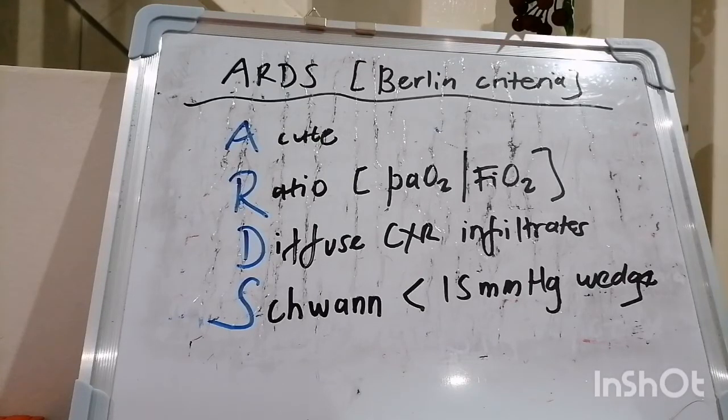In terms of PEEP, this should be employed to keep the FIO2 in the presumed non-toxic range, which is below 0.6. We increase PEEP by increments of 3 to 5 cm up to a ceiling of 15 to 20 cm to increase mean airway pressure in order to recruit the alveoli, which implies that we are trying to prevent alveolar collapse and ventilator-induced lung injury, and, of course, increase your functional residual capacity, which will be helpful.